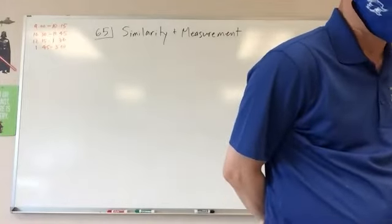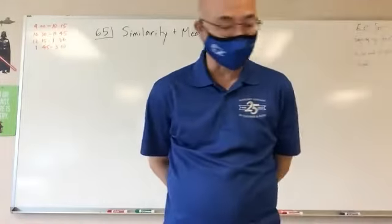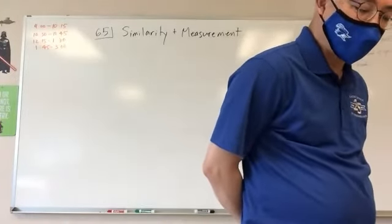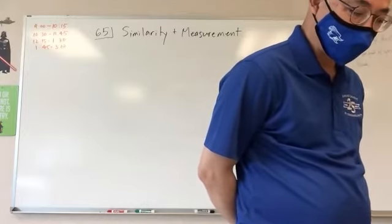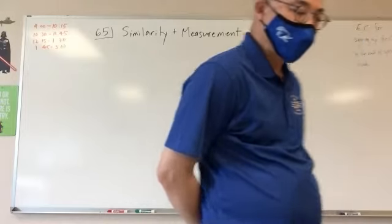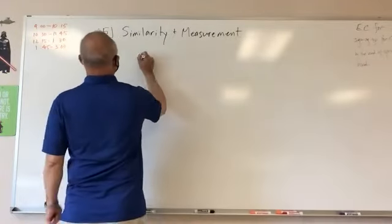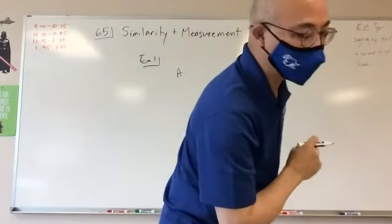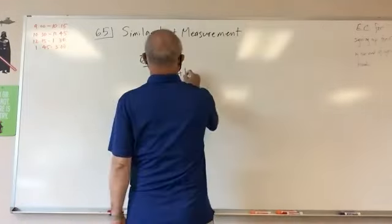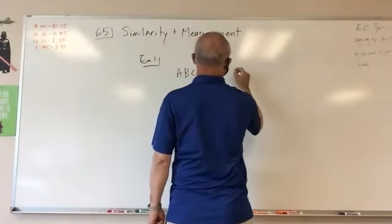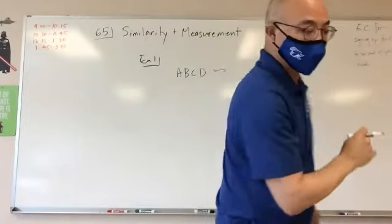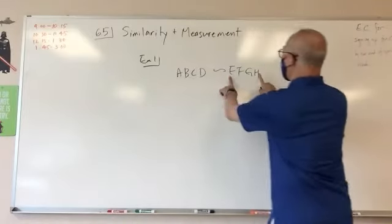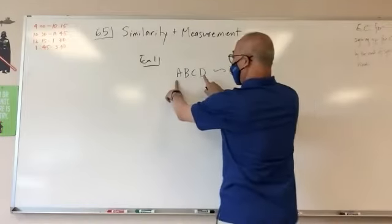Looking at that statement, how would you read it up? Josh, what is the corresponding part to EH? ABCD is similar to EFGH. I'm looking at EH, right? EH, so it must be AD, correct?